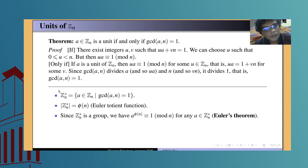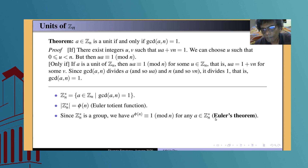The units in any ring form a group, so Z_n* is a group under multiplication modulo n of size phi(n). By Lagrange's theorem, for any element a in Z_n*, a to the power phi(n) must be the identity, that is, a^(phi(n)) is congruent to 1 modulo n for any a in Z_n*. This is known as Euler's theorem.